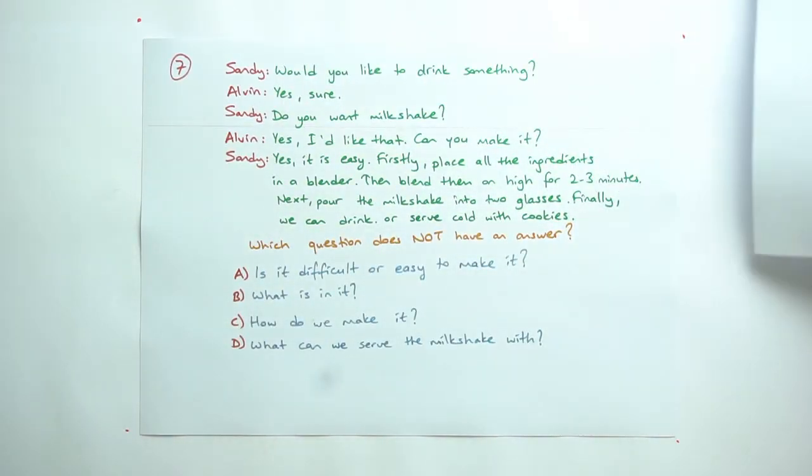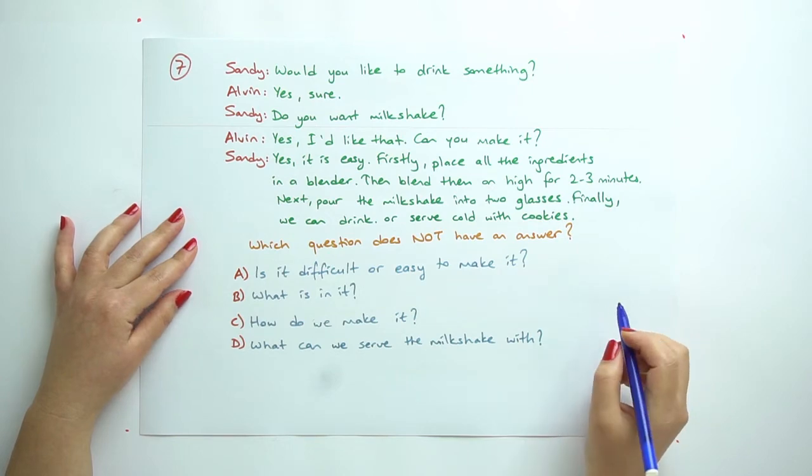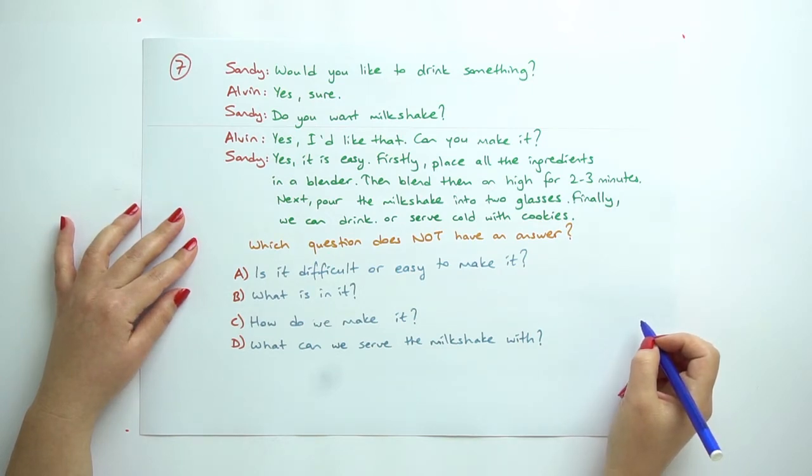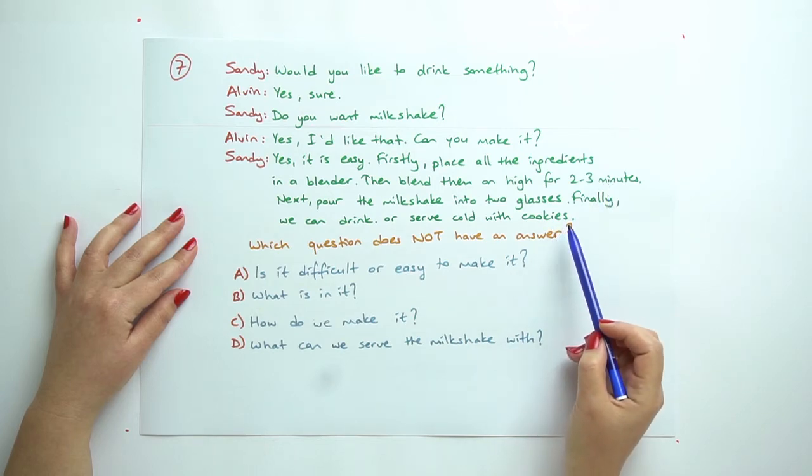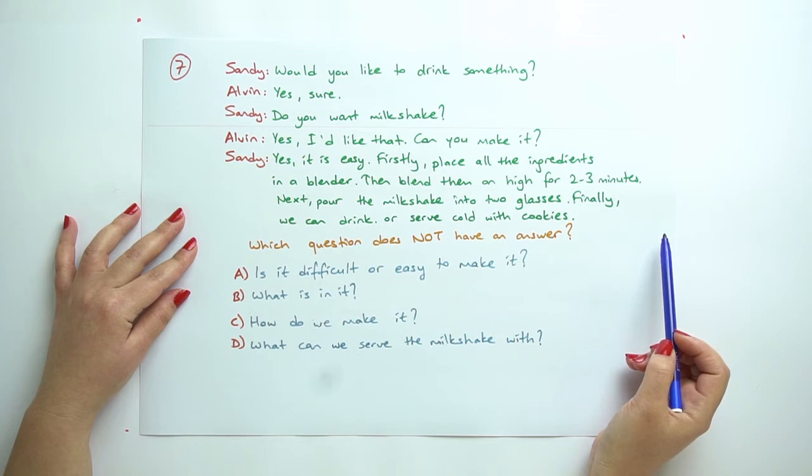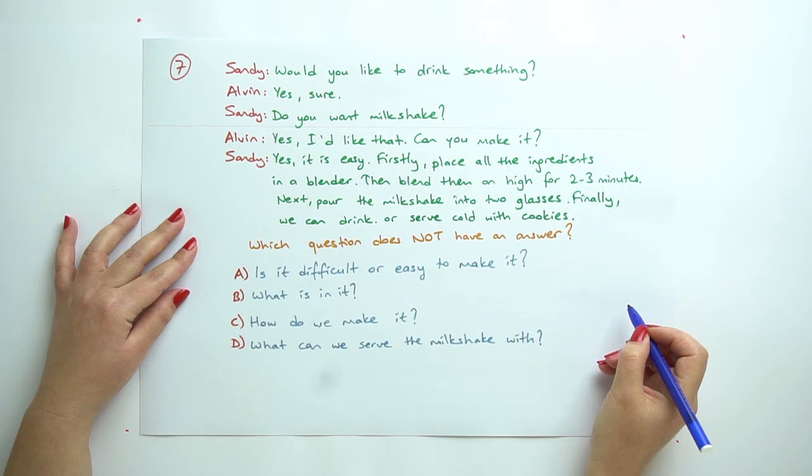Question 7: Which question does not have an answer? Sandy: would you like to drink something? Alvin: yes, sure. Sandy: do you want milkshake? Alvin: yes, I would like that. Can you make it? Yes, it is easy. First, place all the ingredients in a blender. Then blend them on high for 2 or 3 minutes. Next, pour the milkshake into 2 glasses. Finally, we can drink or serve cold with cookies.